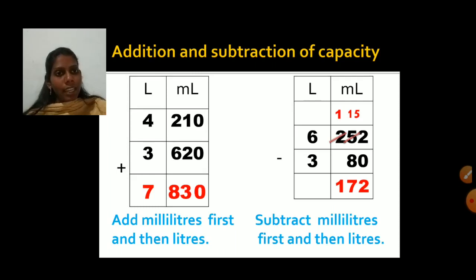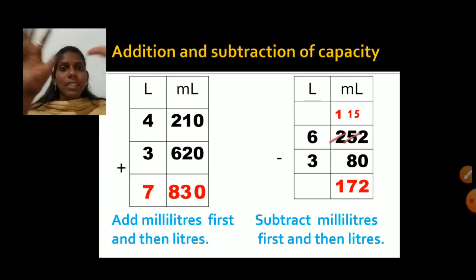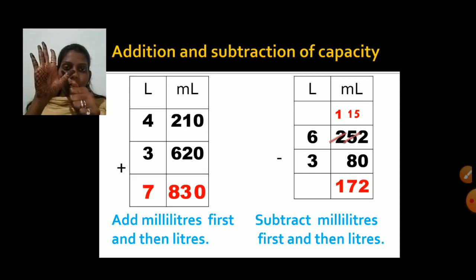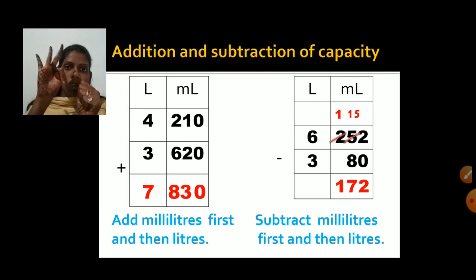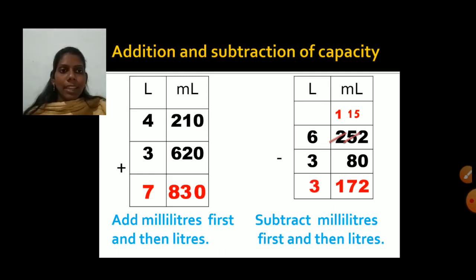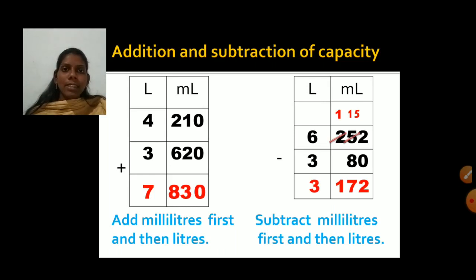Now we subtract liters: 6 minus 3. We cut 3 fingers — 1, 2, 3 — so 6 minus 3 equals 3. We write 3 liters. Final answer: 3 liters and 172 milliliters.